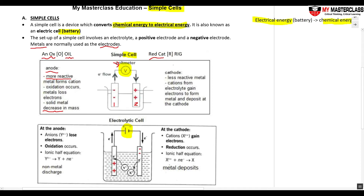And then the cathode — red cat — reduction occurs at the cathode. Reduction is gaining electrons. My electrons, because they are lost at the anode, flow into the cathode and are gained. The electrons are gained and reduction takes place at the cathode. Generally, this cathode is made from the less reactive metal. The cations from the electrolyte will gain these electrons and are reduced, and they will form deposits around the cathode. This is a simple cell setup.